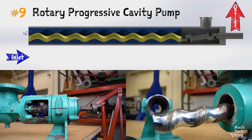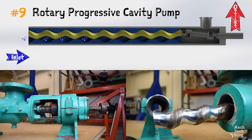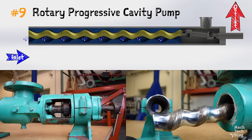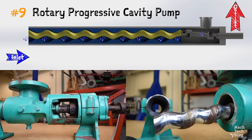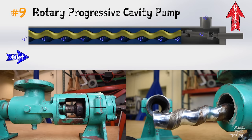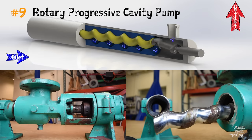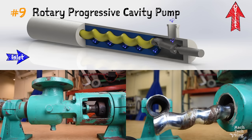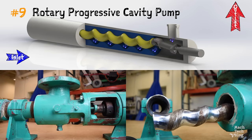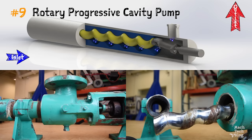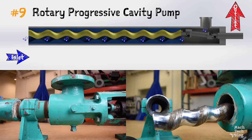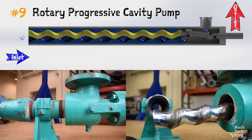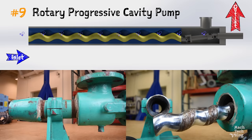Our final pump is pump number nine: the progressive cavity pump. These pumps may look somewhat like screw pumps, but they function differently. The rotor is shaped like a helix, and the housing is molded into the shape of a double helix. As the rotor rotates and oscillates inside of the housing, it forms a cavity which progresses along the length of the housing. Any fluid trapped in this progressing cavity is delivered to the discharge outlet.